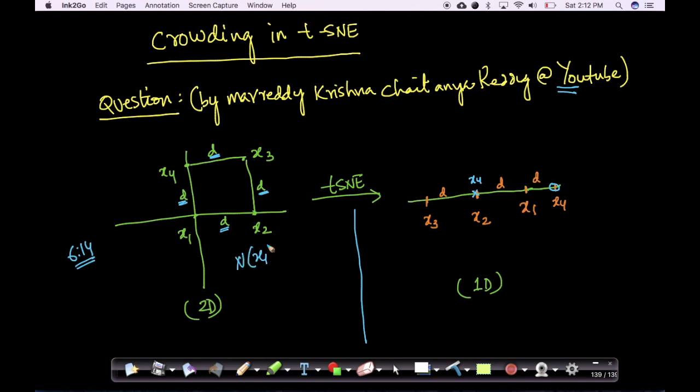What is the neighborhood of point x1? So, let us assume neighborhood only is about points which are in distance d. So, the neighborhood of point x1 is x2 and x4. In 2D, this is in 2D.